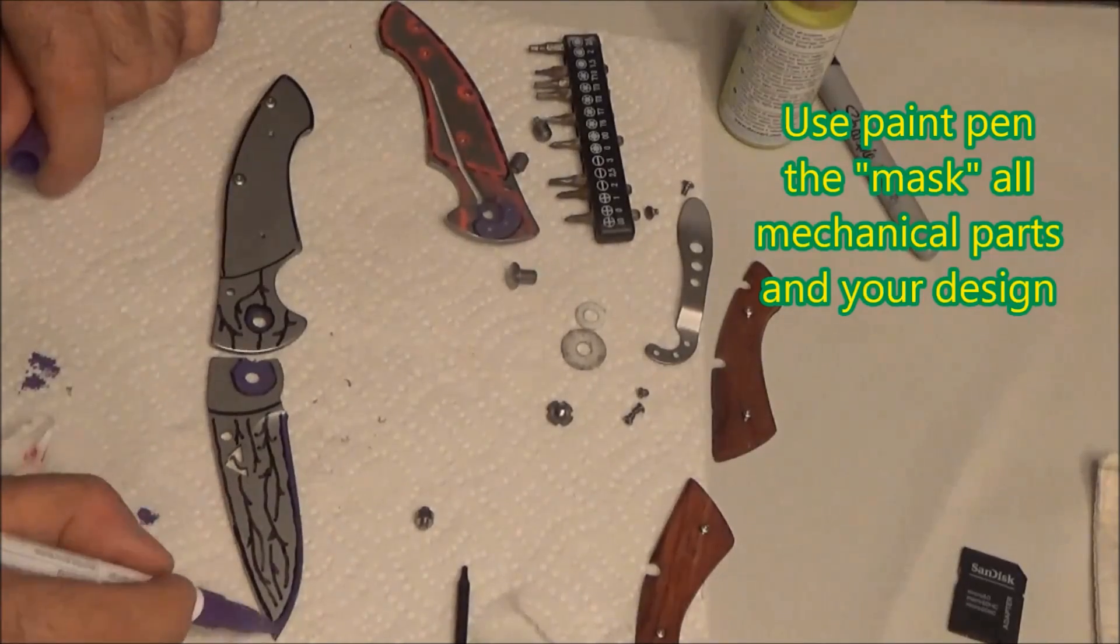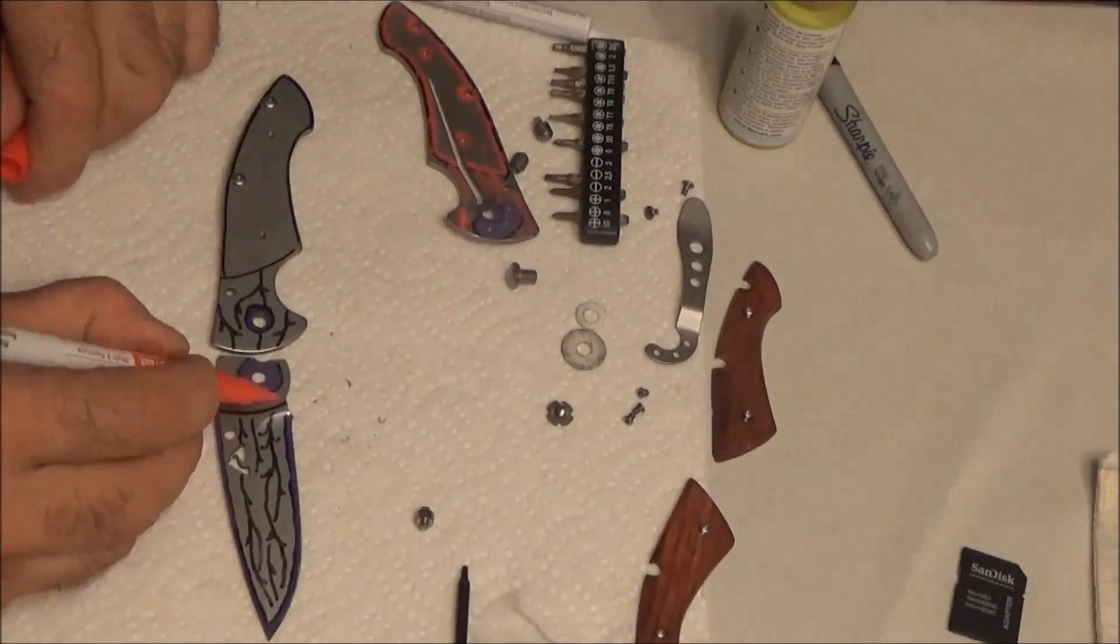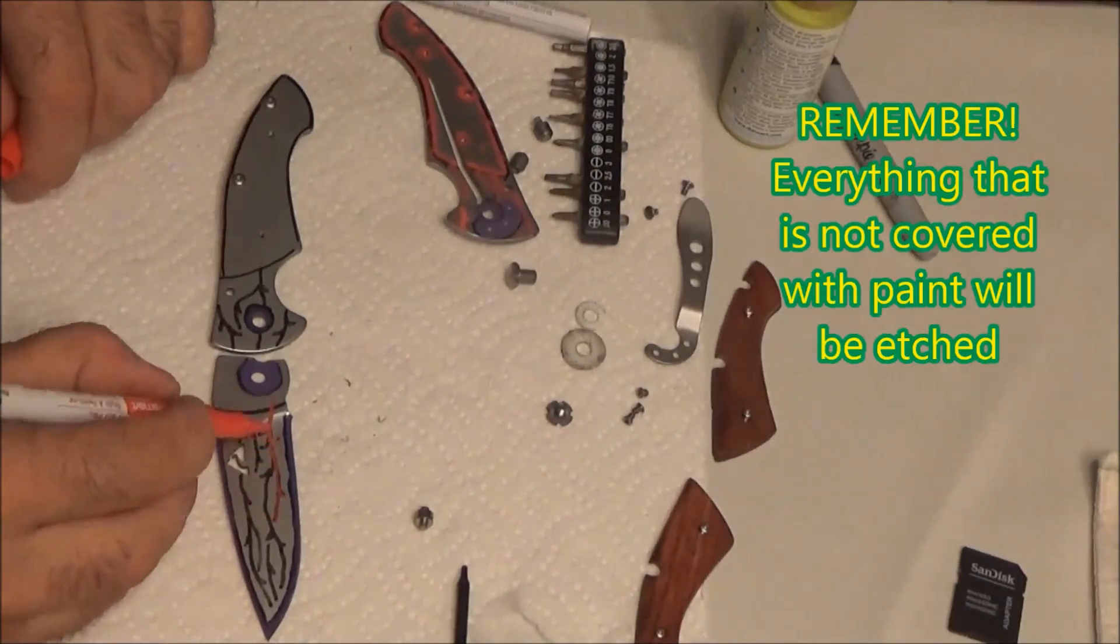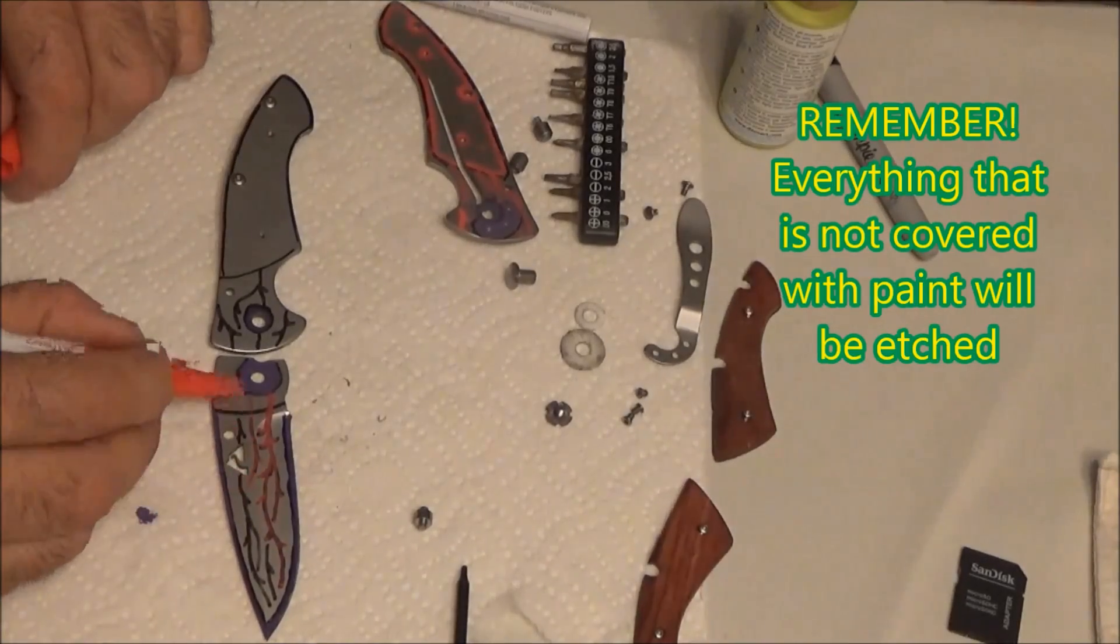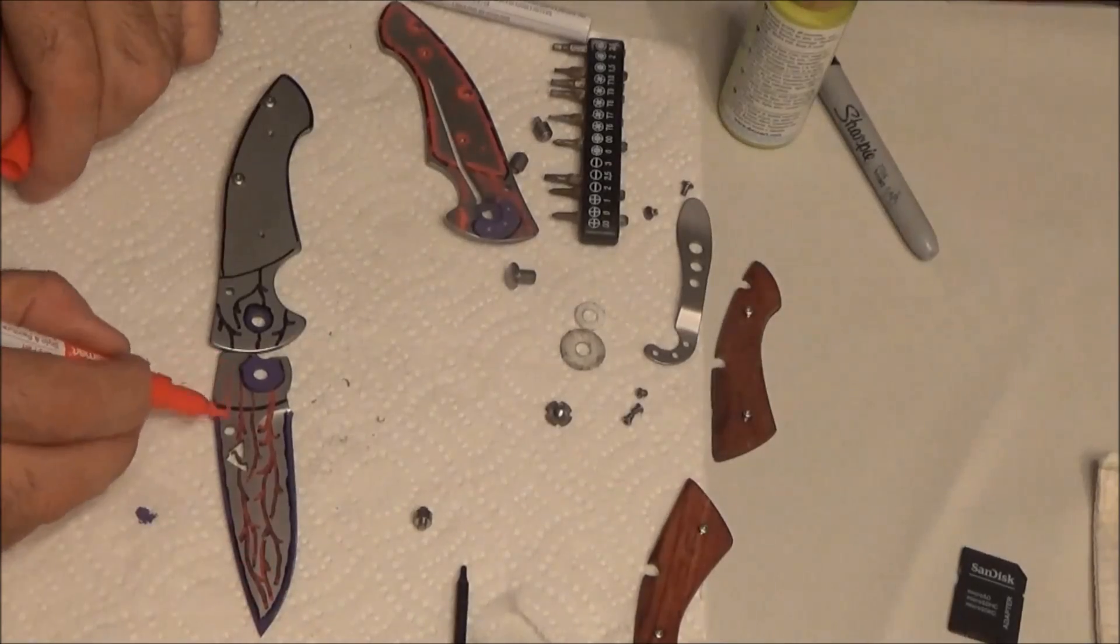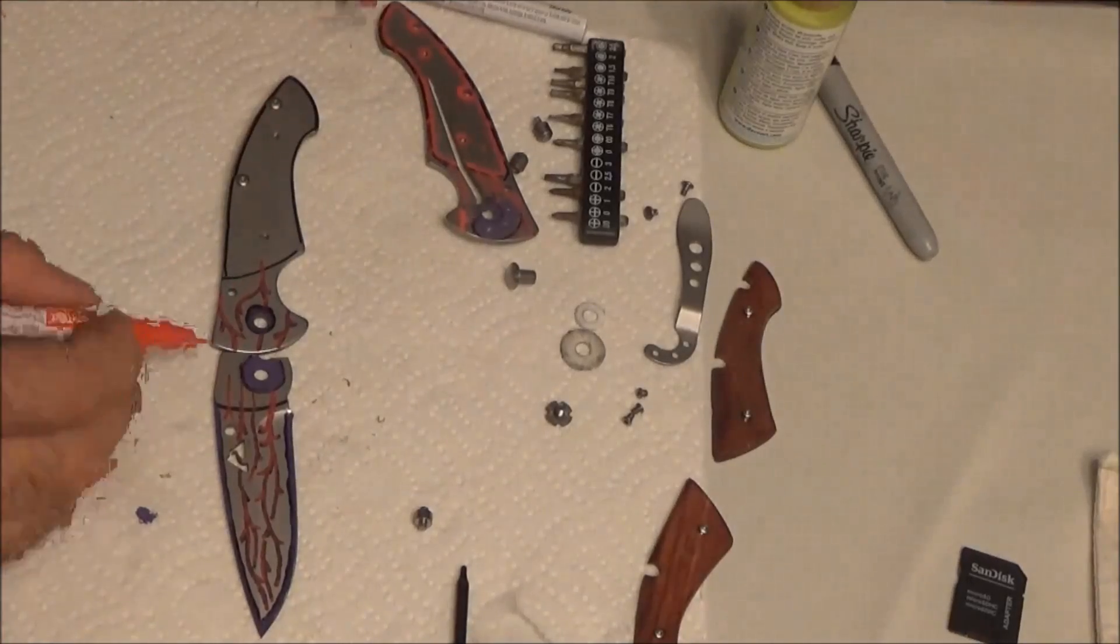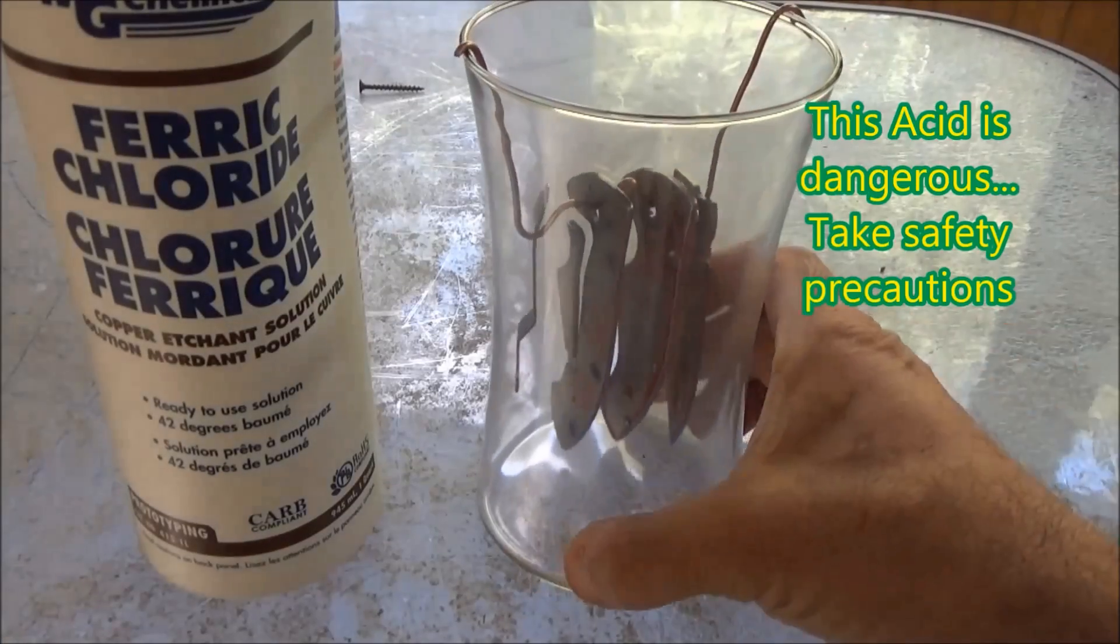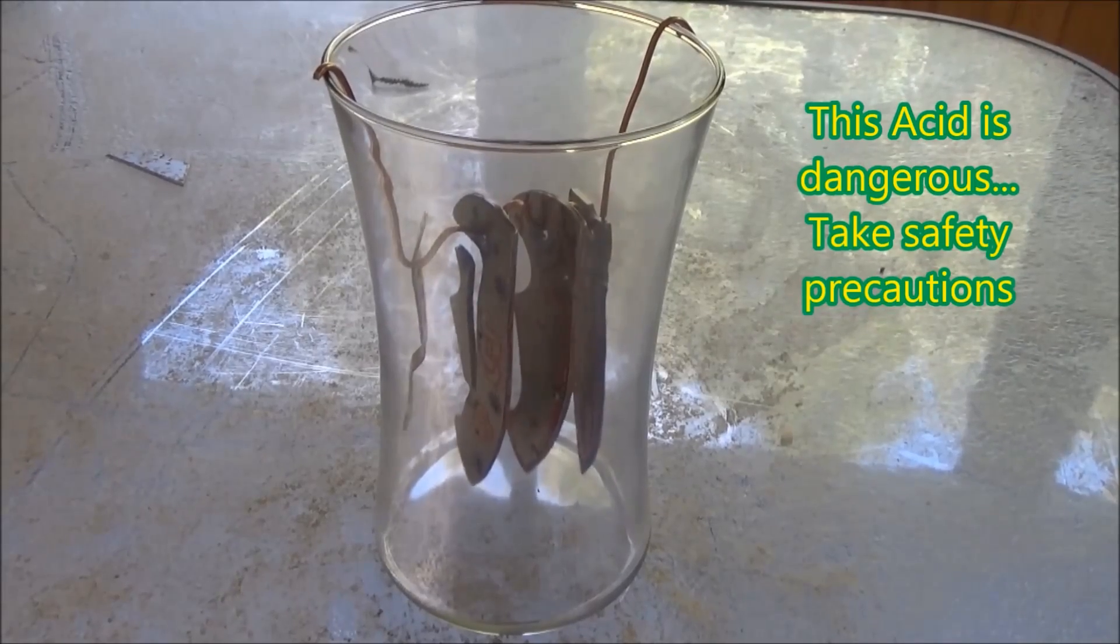Here, I'm using an acrylic paint pen to fill in all of the mechanical spots, pivot holes, and blade of the knife. Then I'm using a red, finer acrylic pen to fill in the design. Remember that anything with paint on it will not be etched.